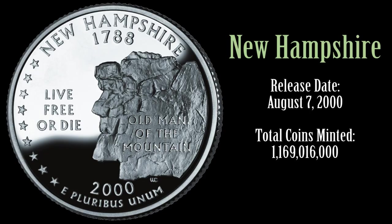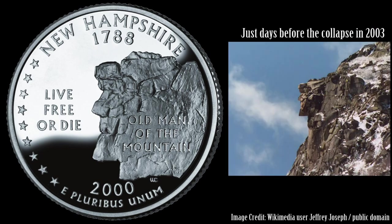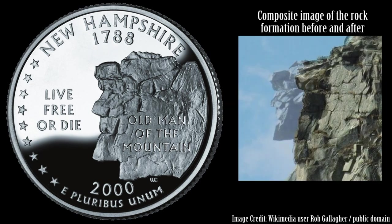New Hampshire's Quarter features the Old Man of the Mountain, a great face of stone that used to protrude from granite cliffs of the White Mountains, first recorded in 1805. The rock formation collapsed in May 2003, less than three years after the quarter's release. The quarter also features nine stars to the left, a reference to New Hampshire being the ninth state to ratify the Constitution. The state's motto of Live Free or Die appears as a caption. The phrase was first used by a Revolutionary War veteran in 1809 and recalls the assertive independence of the United States.